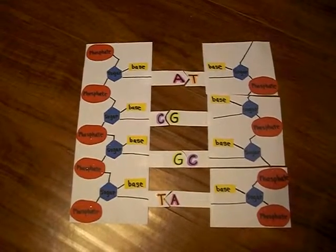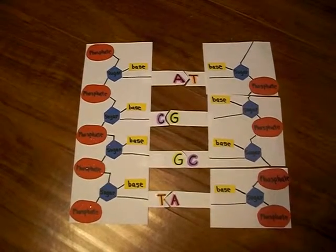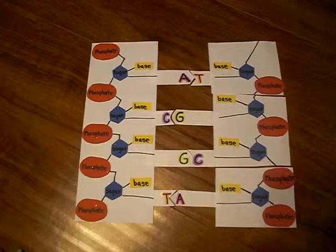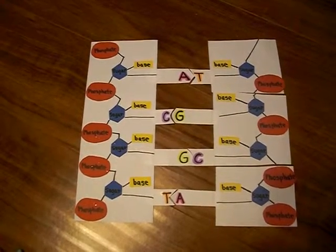In each strand of DNA, the phosphates, sugars, and bases are covalently bonded to each other and hydrogen bonds keep the two strands of DNA together.